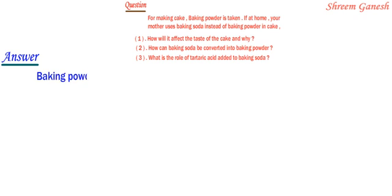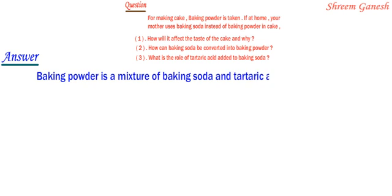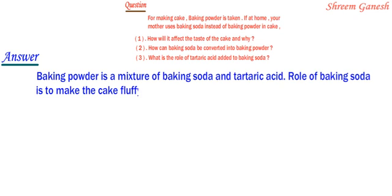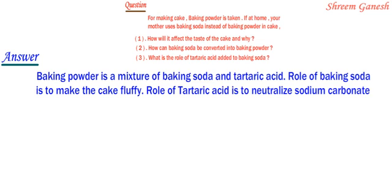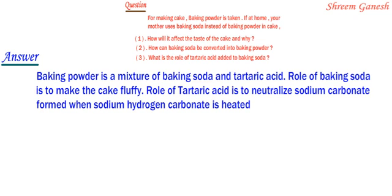Baking powder is a mixture of baking soda and tartaric acid. The role of baking soda is to make the cake fluffy. The role of tartaric acid is to neutralize sodium carbonate formed when sodium hydrogen carbonate is heated during cooking.